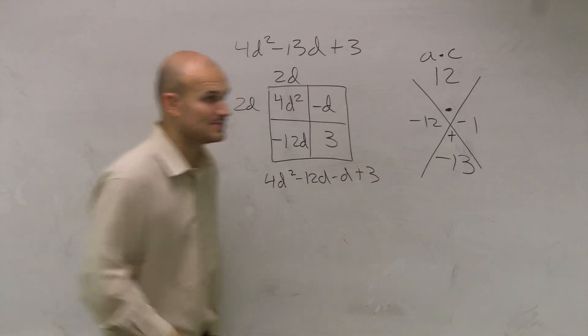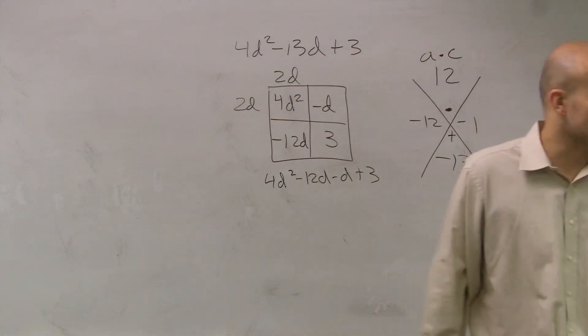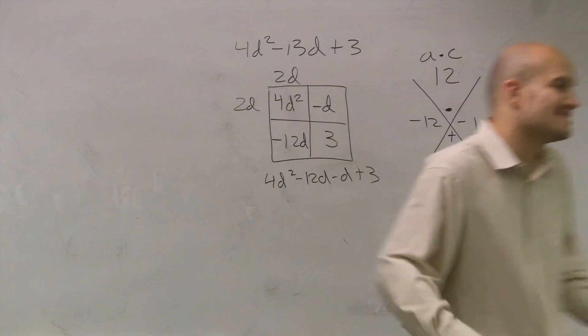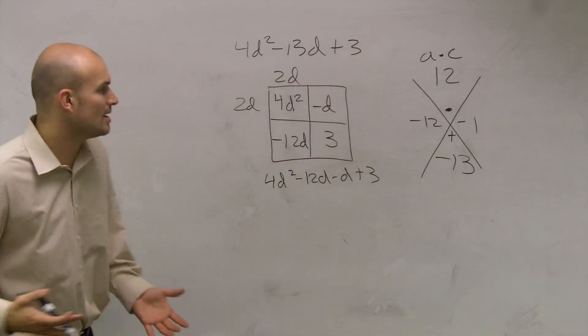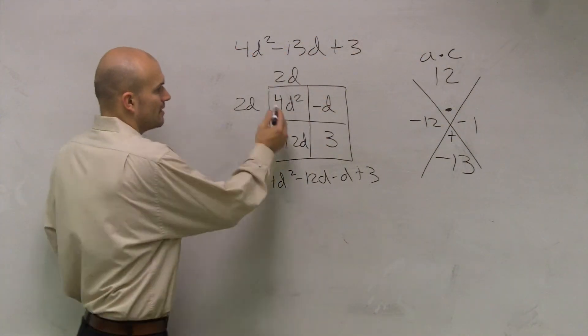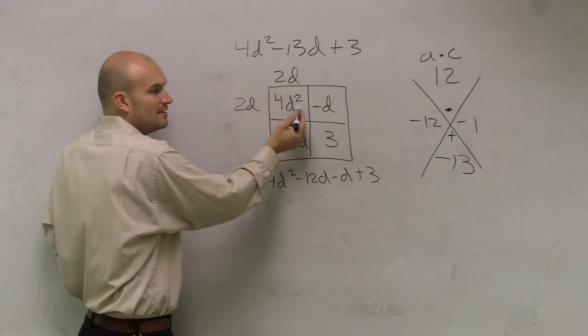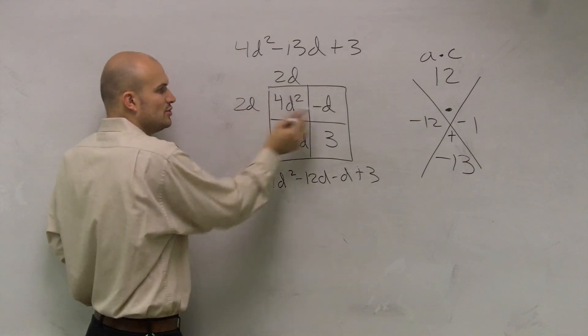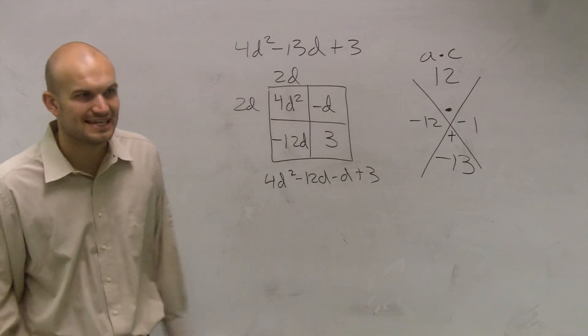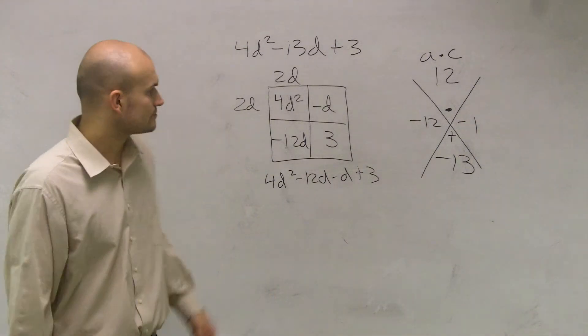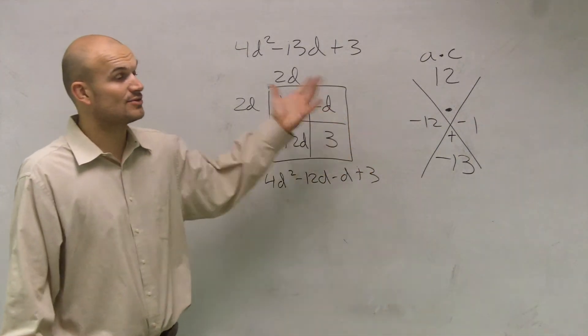This is the most common response we get is 2d, right? Most people, when I say what is 4d squared, they say, oh, it's 2d times 2d. You're right. But here's the problem. So I know 2d times 2d gives me 4d squared. But 2d times what gives me a negative d? Negative d. That'll give you negative 2d, right? So we come into a problem.